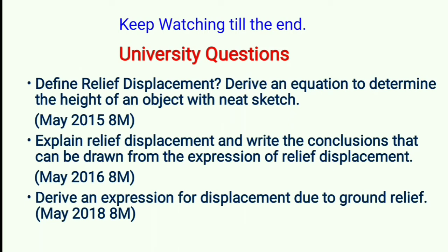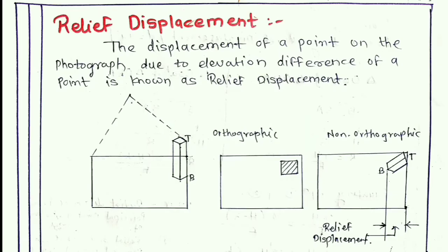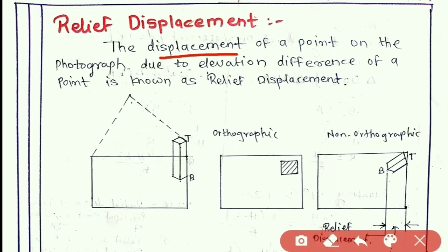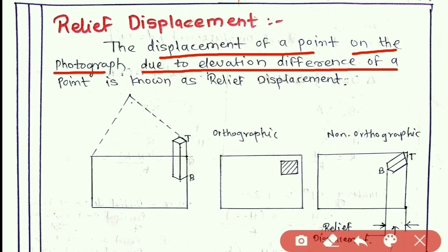You can pause the video and carefully read every question. Now, first of all, what is relief displacement in aerial photogrammetry? The definition says: the displacement of a point on the photograph due to elevation difference of a point is known as relief displacement.